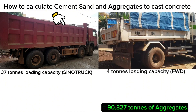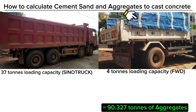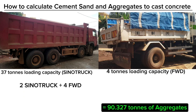One 12-tire sino-truck has a loading capacity of 37 tons, and one forward truck has a loading capacity of 4 tons, meaning we purchase two sino-trucks and four forward trucks to get 90 tons.